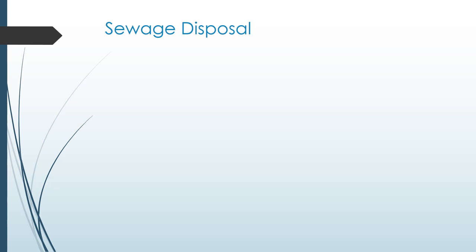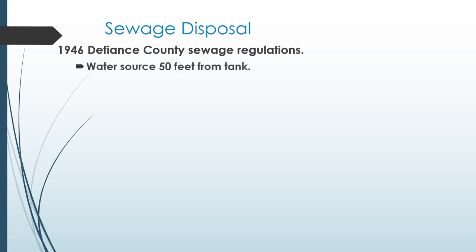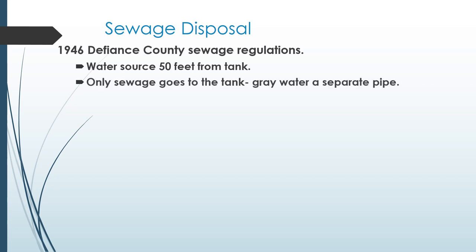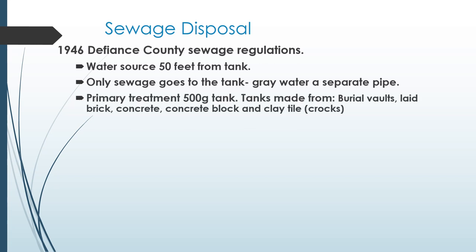Another early program was sewage disposal. In 1946, Defiance County had sewage regulations, and permits from this period still exist. The water source needed to be 50 feet from the tank — still a typical regulation today. Only sewage waste from the toilet went into the tank, and gray water was a separate pipe that drained to a ditch or tile. Primary treatment was a 500-gallon tank.